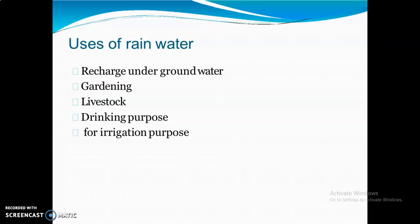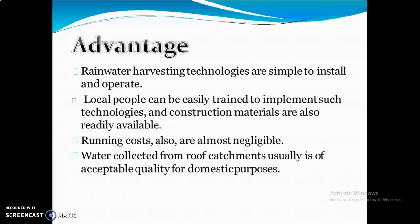What are the different uses of rainwater? There are different uses. First is to recharge underground water. We use this rainwater harvesting technique to recharge the underground water, for gardening, for livestock — that is bathing and cleaning — for flushing, etc. For drinking purposes, after filtration, this water can be used for drinking as well as for irrigation purposes.